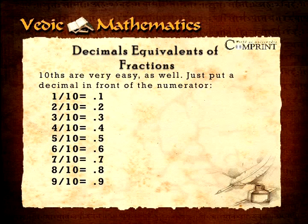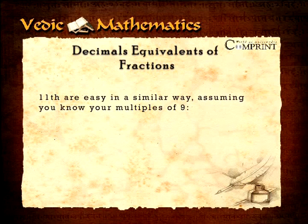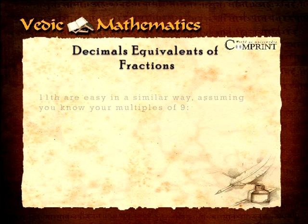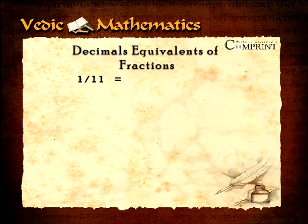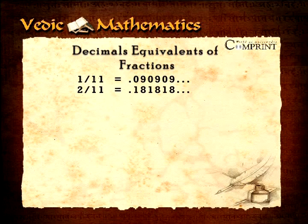Remember how easy the nines are. Similarly, the elevens are easy, assuming you know your multiples of nine. For instance, one by eleven equals 0.090909, and so on. Two by eleven equals 0.181818, and so on.